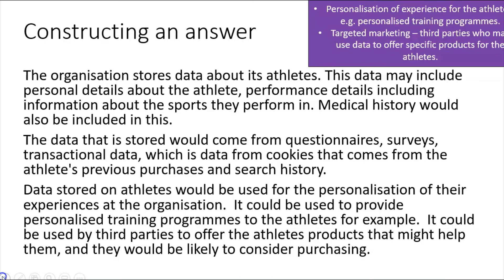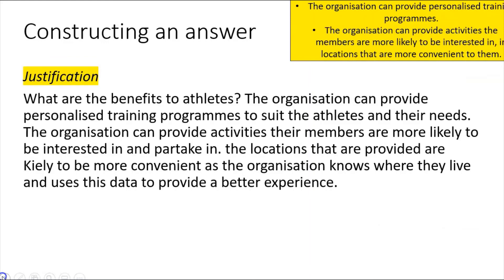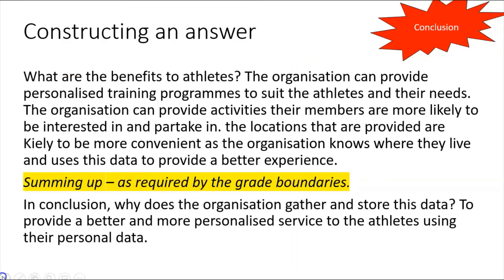Here's where I pick up my marks — the justification. I've made it clear to the examiner with a heading: 'What are the benefits to athletes?' The organization can provide personalized training programs tailored to athletes' needs, activities members are more likely to be interested in and partake in, and locations that are more convenient since the organization knows where they live. Then a conclusion is required for the highest grade boundary: 'The organization gathers and stores this data to provide a better and more personalized service to the athletes using their personal data.'